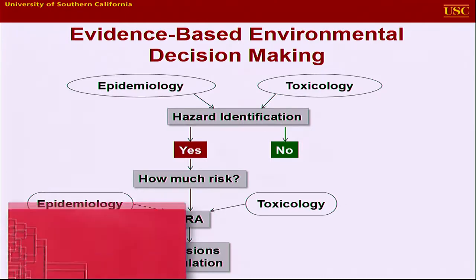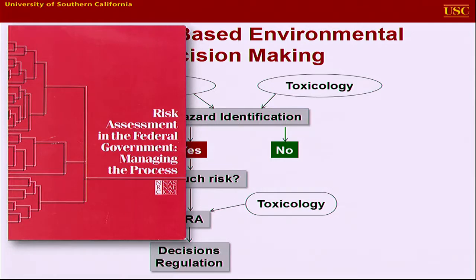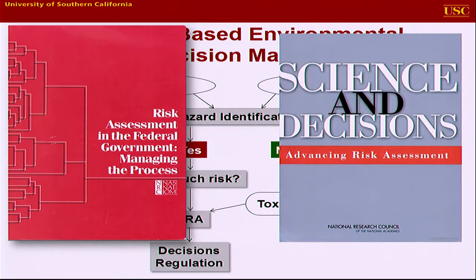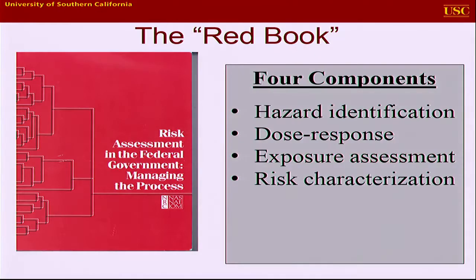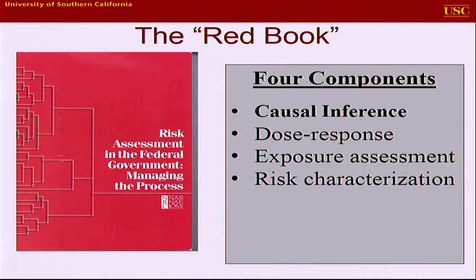This has been put together historically — Kim already mentioned the Red Book, 1983, it lives on. And then more recently, the so-called Silver Book, which elaborated on the concepts of the Red Book. The Red Book offered this four-element framework: hazard identification, dose response, exposure assessment, and risk characterization. And you might think about replacing hazard identification with causal inference and judging whether an agent is linked to a disease.